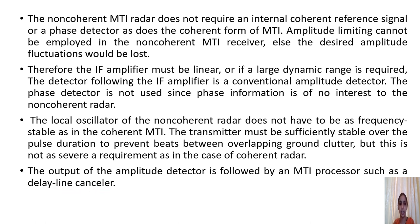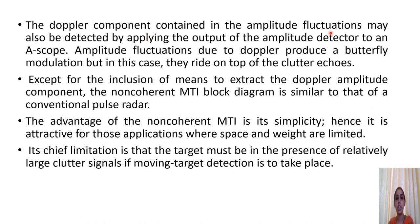The output can be fed to an MTI processor such as a delay line canceller. The Doppler component contained in the amplitude fluctuation may also be detected by applying the amplitude detector output to an A-scope, where butterfly modulation and amplitude fluctuations riding on top of the clutter returns can be observed. The non-coherent MTI block diagram is similar to a conventional pulse radar.